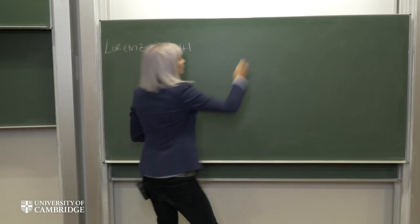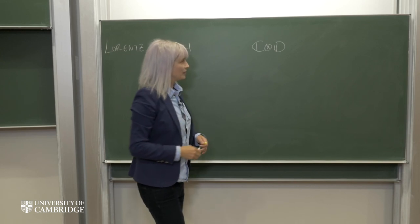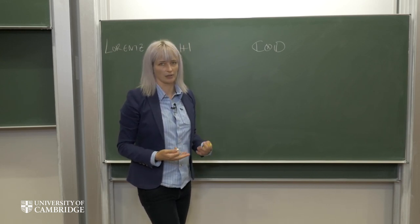And then we're going to look at the complex octonions, and we're going to find that these give other internal degrees of freedom, so things like color and electric charge.